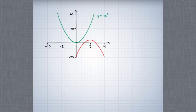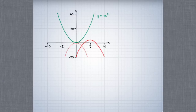There are several ways to produce the transformed graph starting with y equals x squared. One way is to start by reflecting it in the x-axis, and if we do that, this is what we get. There's a second step: we can translate this five units to the right, five units parallel to the x-axis, and if we do that we get this. The third step would now be to translate this four units upwards, four units parallel to the y-axis.